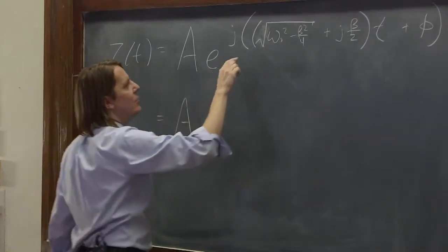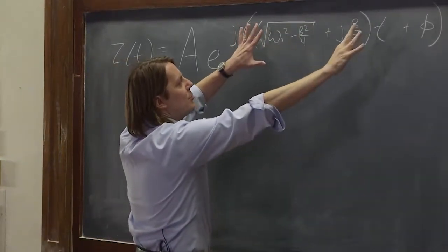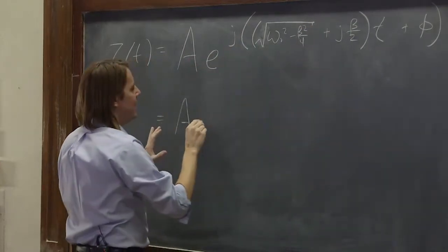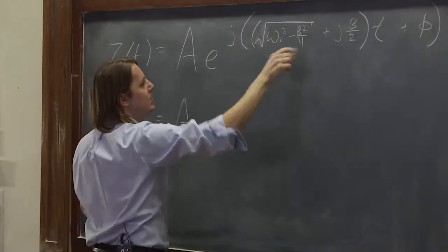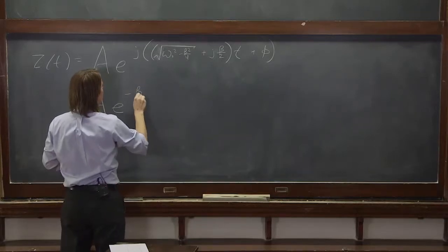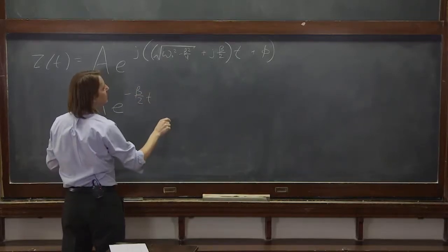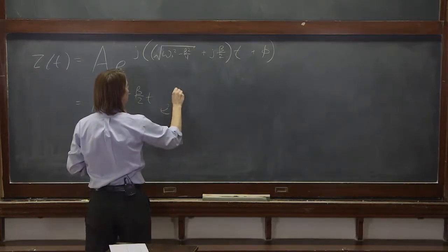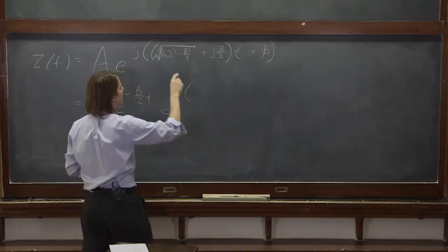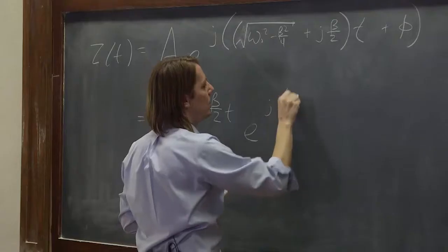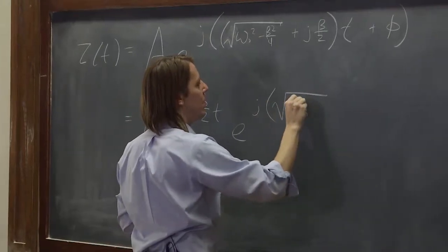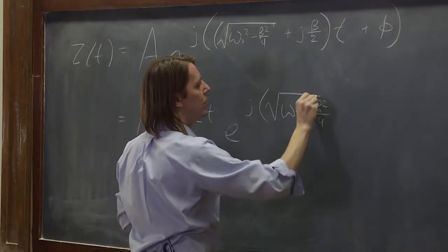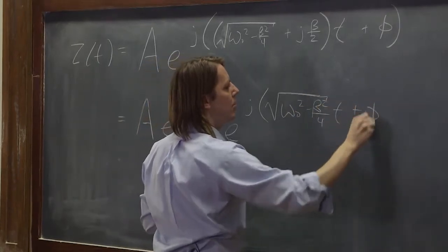It would be A, and let's pull out. Remember, this sum in the exponent is really just a bunch of products down here. So we can just pull it out. It would be AE to the J times J is minus 1 beta over 2T, because the T is there. And then what's left would be the parts that were actually imaginary, the square root of omega naught squared minus beta squared over 4T plus phi.